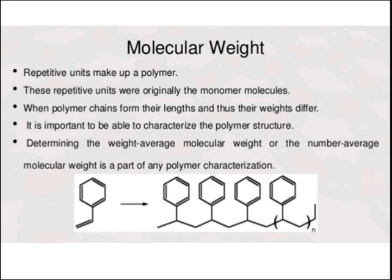Repeating units make up a polymer, and these repeating units were originally the monomer molecules. When polymer chains form, their lengths and thus their weights are different, and it is very important to be able to characterize the polymer structure — whether formed by poly addition, poly condensation, cross linking, or different methods. A monomer unit added repeatedly by poly addition forms a long chain structure called a polymer.